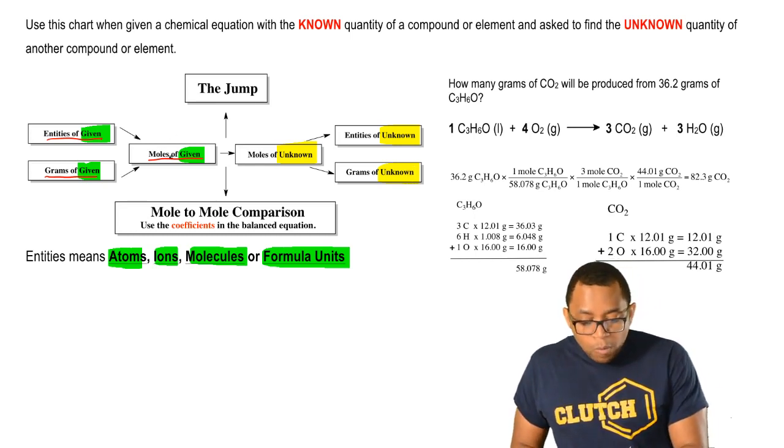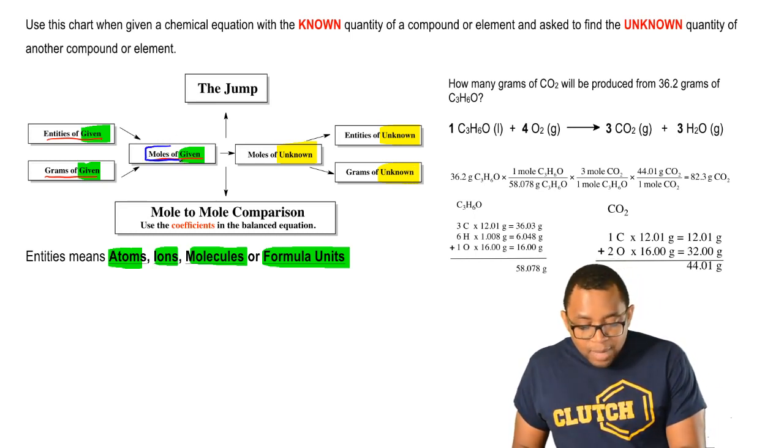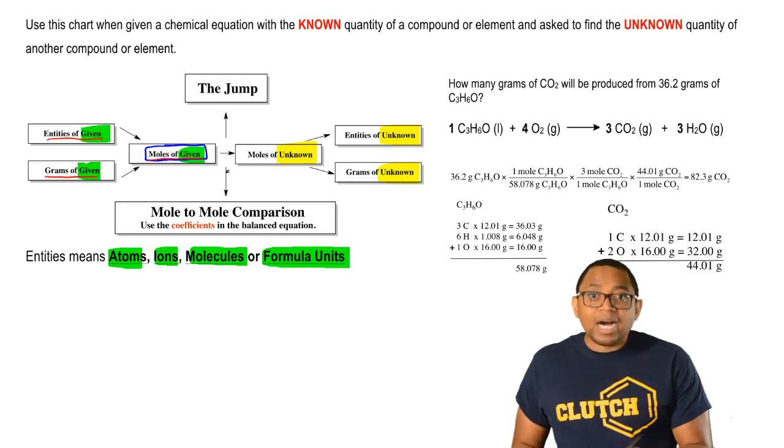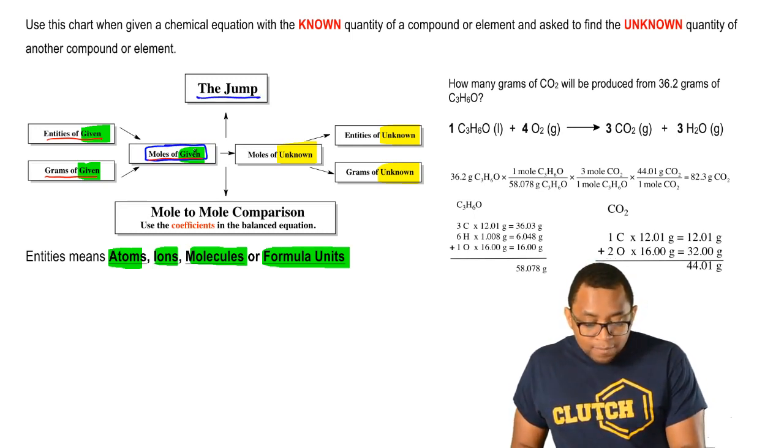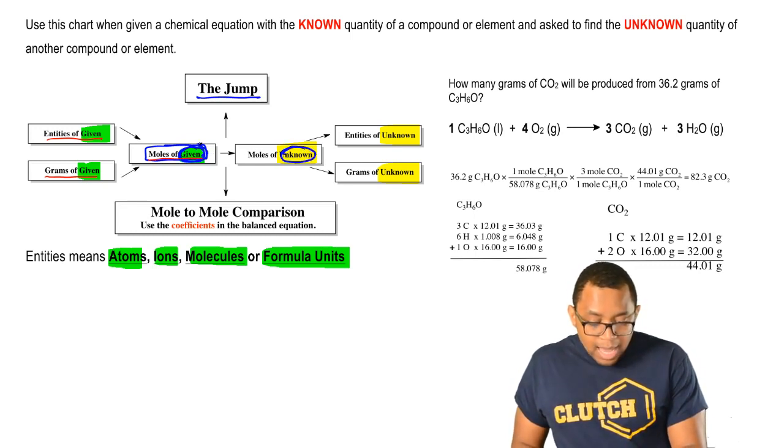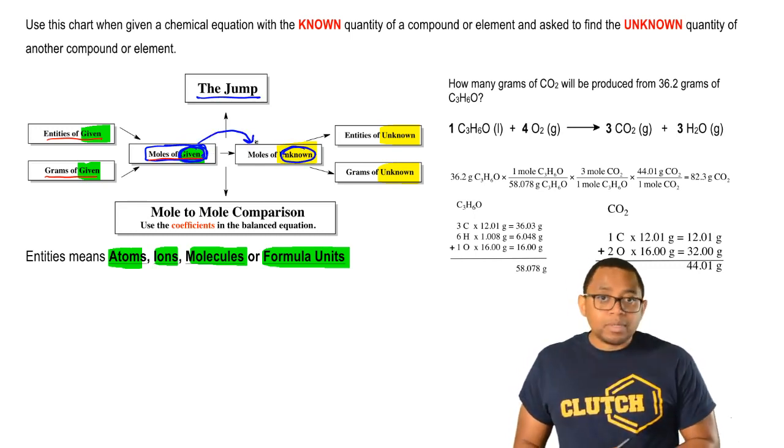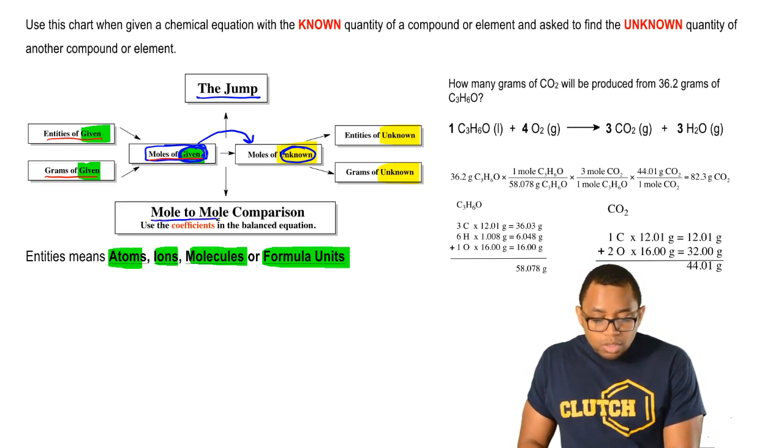Now, following this chart, when we get to moles of given information, we have to make a jump from stuff that we know to stuff we don't know. When we do this jump, we have to do a mole to mole comparison. That means we have to use the coefficients in the balanced equation.